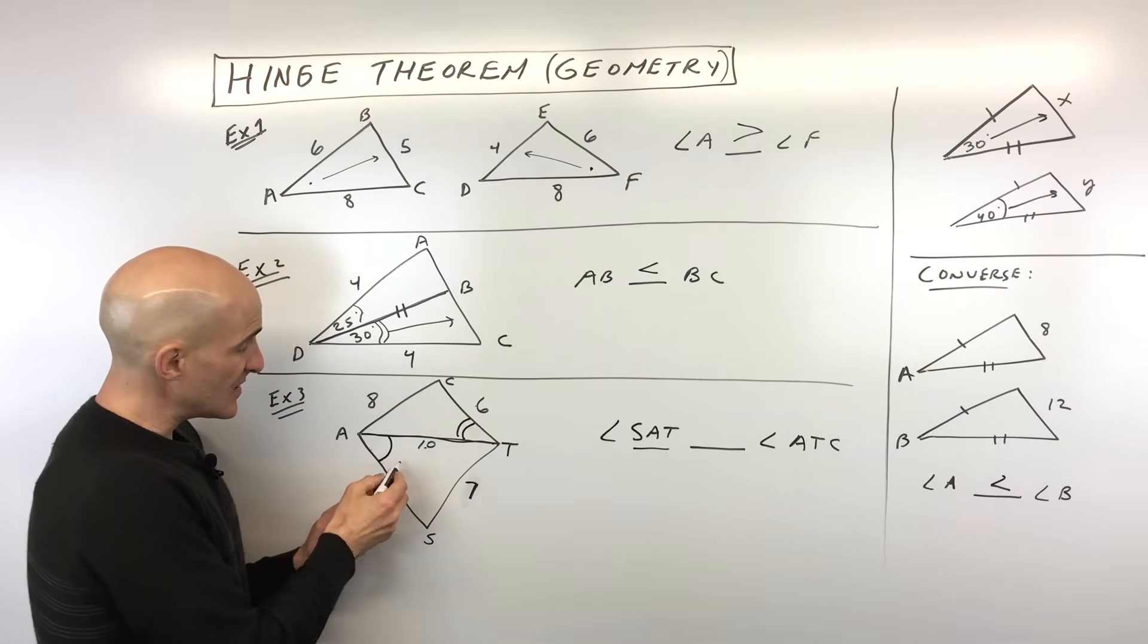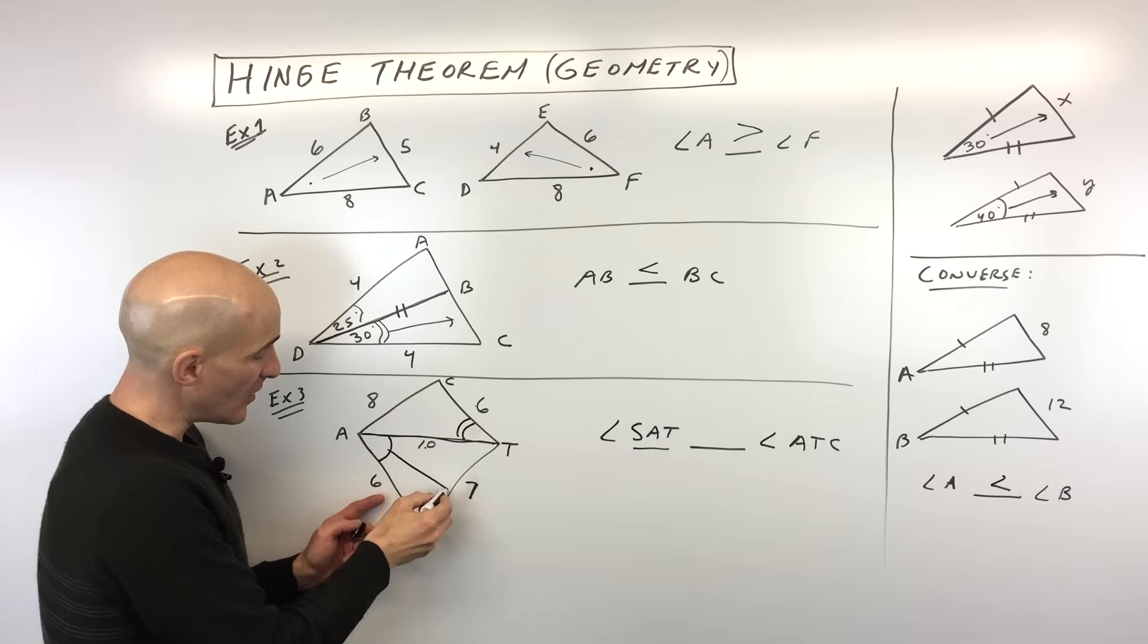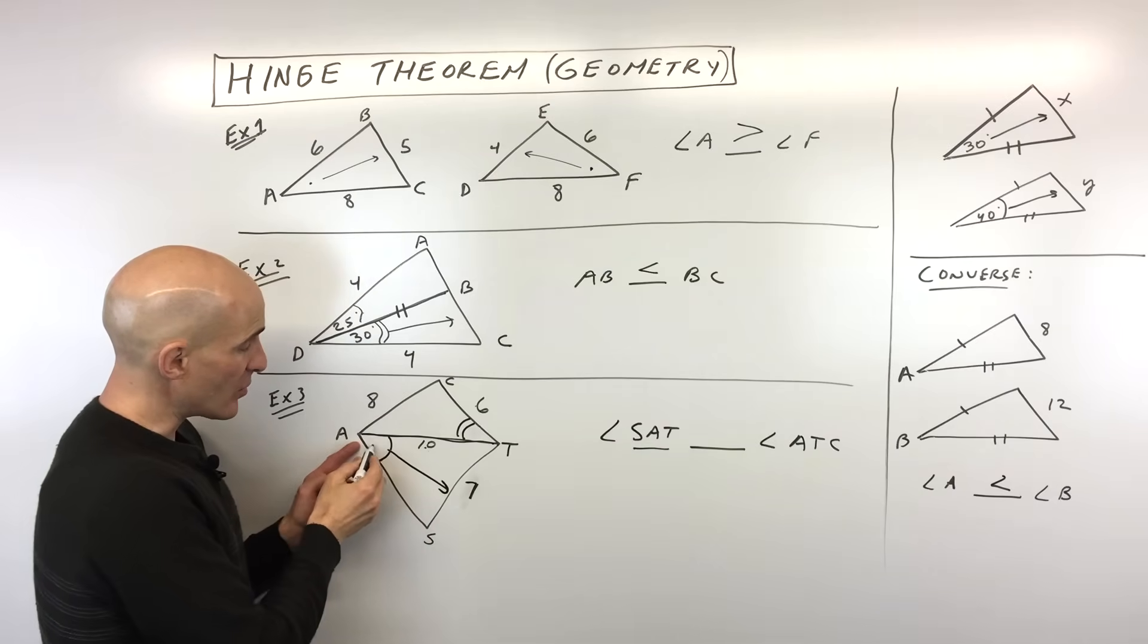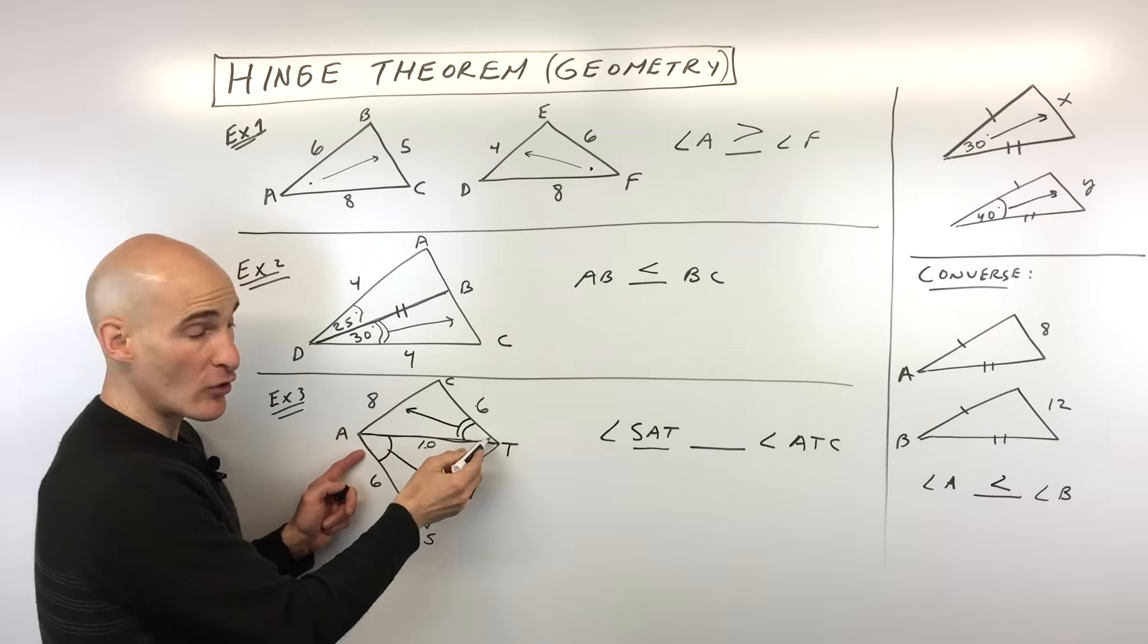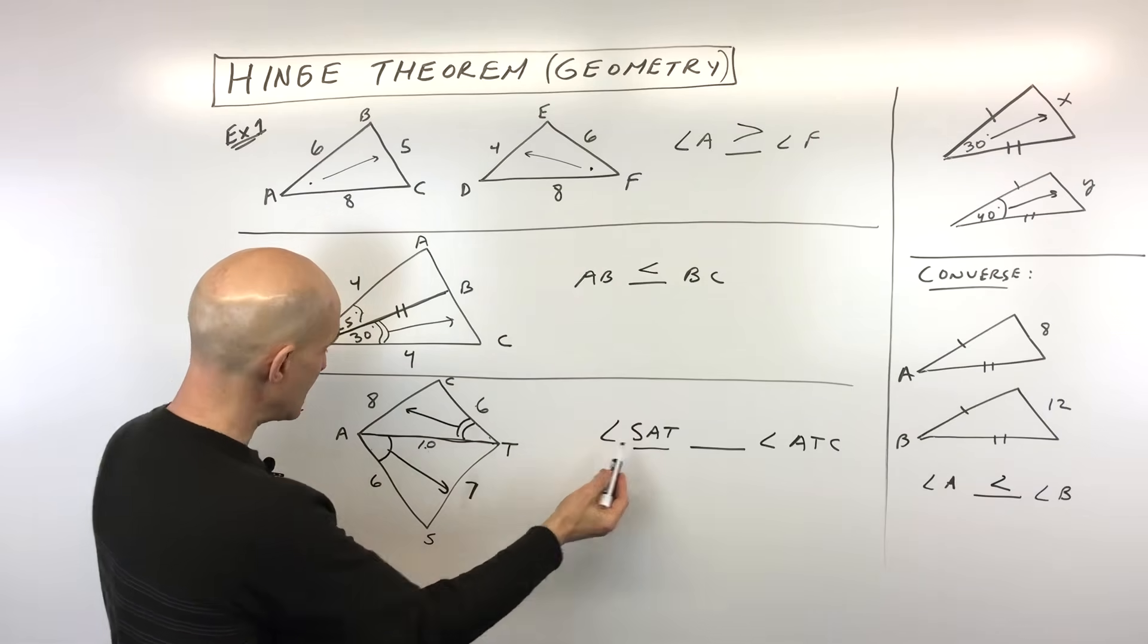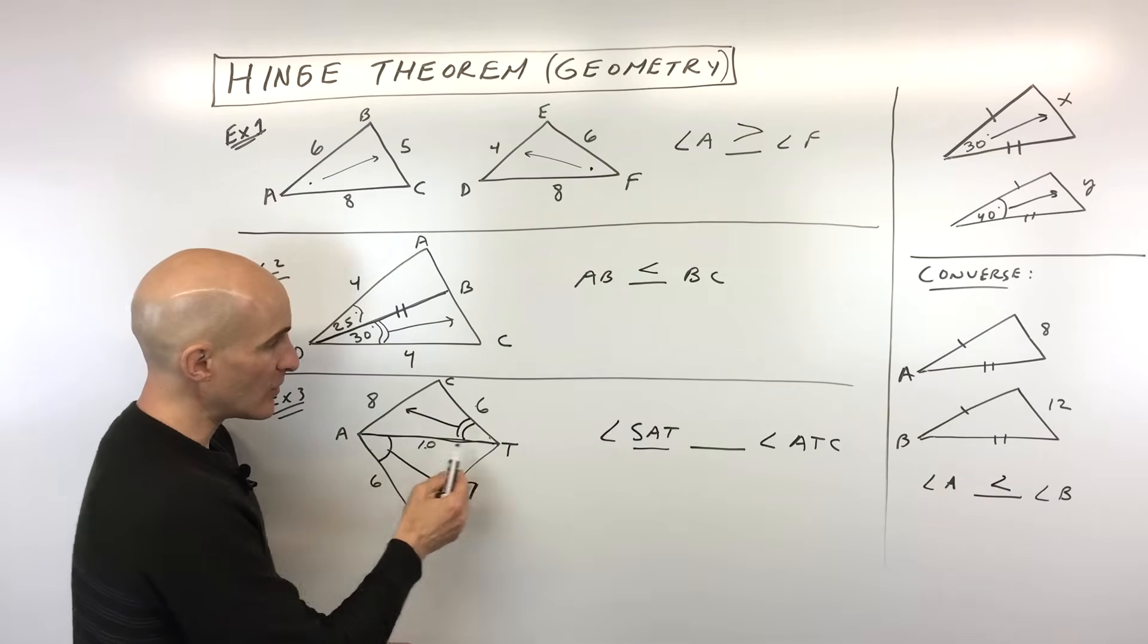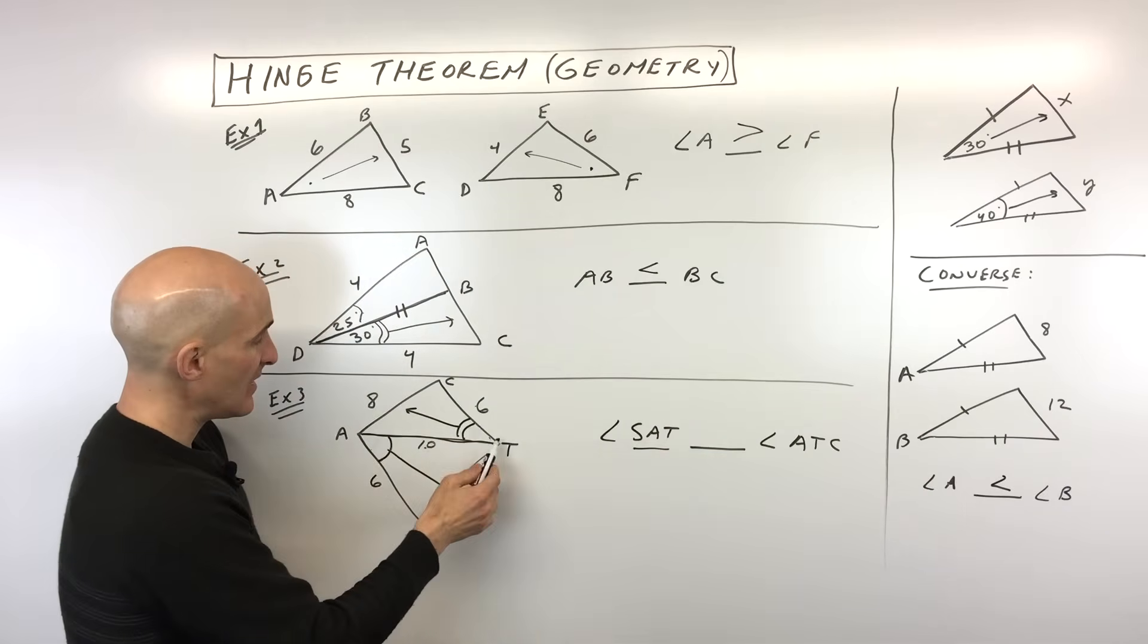But what's different is that the side across from this angle here is shorter than the side that's across from this angle over here. So we're trying to compare angle SAT, SAT, that's this angle, versus ATC, that's this angle.